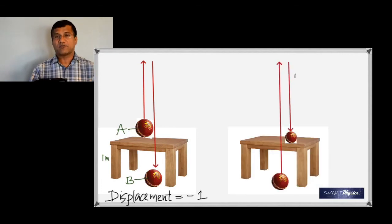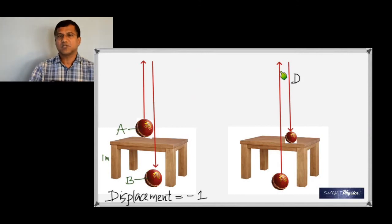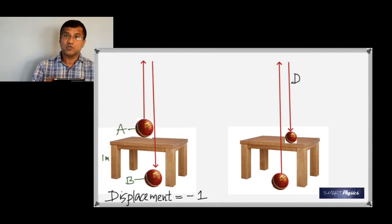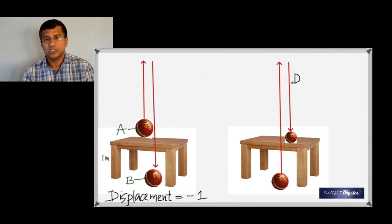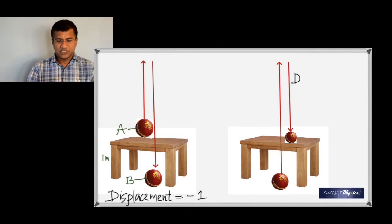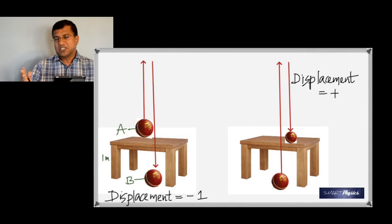Now reverse it: the ball starts from the floor, goes all the way up, and lands on the table. Measuring from the starting point to the finishing point, you are measuring upward, so the displacement is positive one meter.